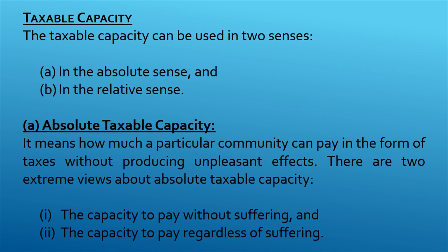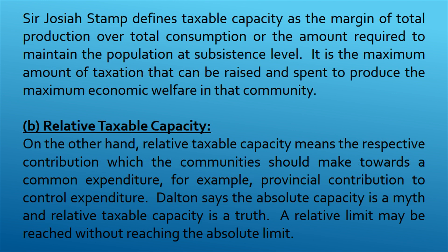Taxable Capacity. The taxable capacity can be used in two senses. First, absolute taxable capacity — it means how much a particular community can pay in the form of taxes without producing unpleasant effects. There are two extreme views: the capacity to pay without suffering, and the capacity to pay regardless of suffering. Sir Josiah Stamp defines taxable capacity as the margin of total production over total consumption, or the amount required to maintain the population at subsistence level. It is the maximum amount of taxation that can be raised and spent to produce the maximum economic welfare in that community.